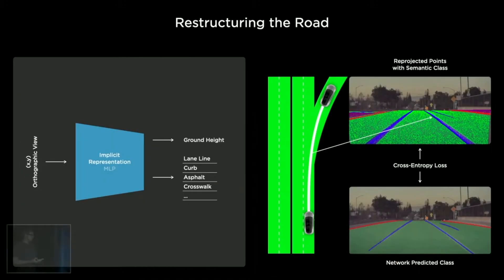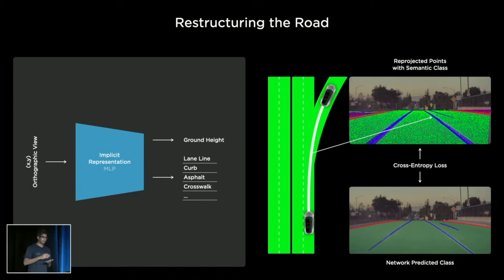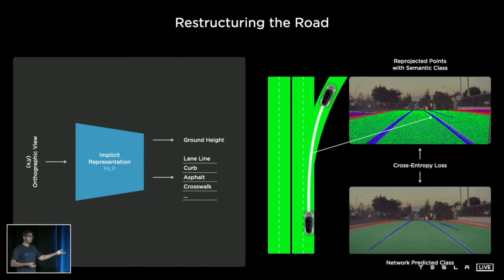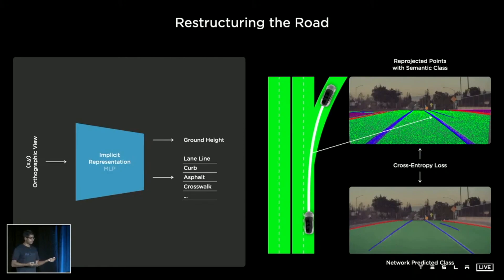One of the first tasks we want to label is the road surface. Typically we can use splines or meshes to represent the road surface, but because of topology restrictions, those are not differentiable and not amenable to producing this. Instead, in the style of neural radiance fields work, we use an implicit representation to represent the road surface. We are querying XY points on the ground and asking the network to predict the height of the ground surface along with semantics such as curbs, lane boundaries, road surface, drivable space, etc. Given a single XY, we get a Z — together these make a 3D point that can be reprojected into all camera views.